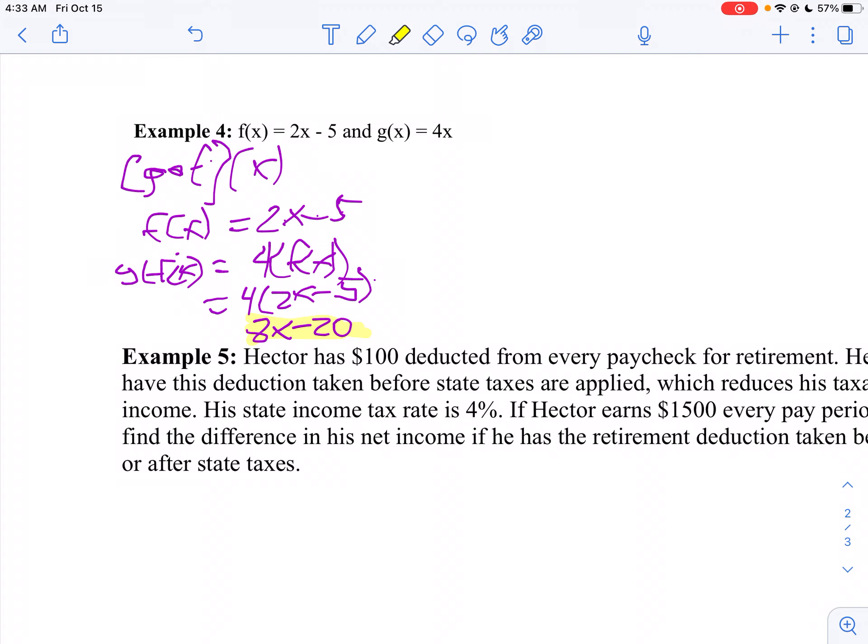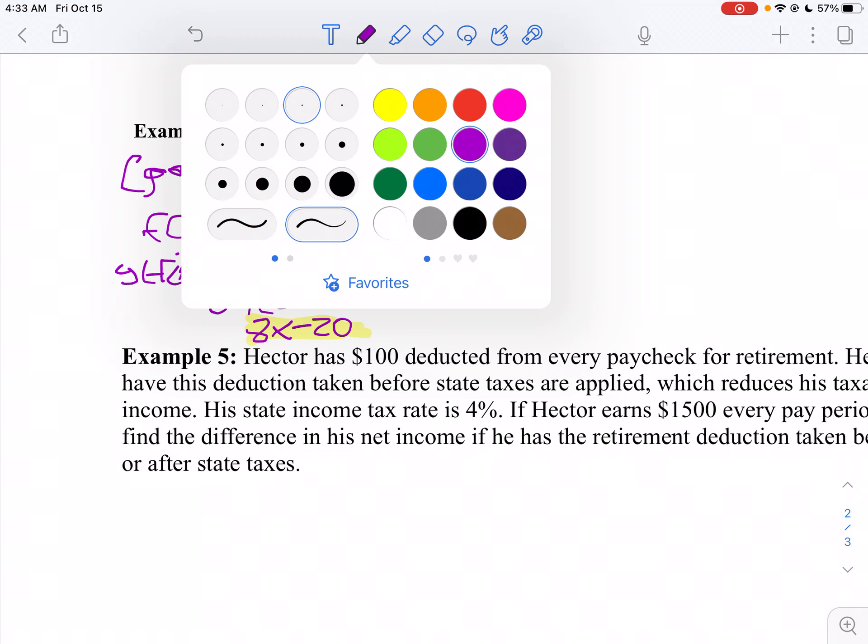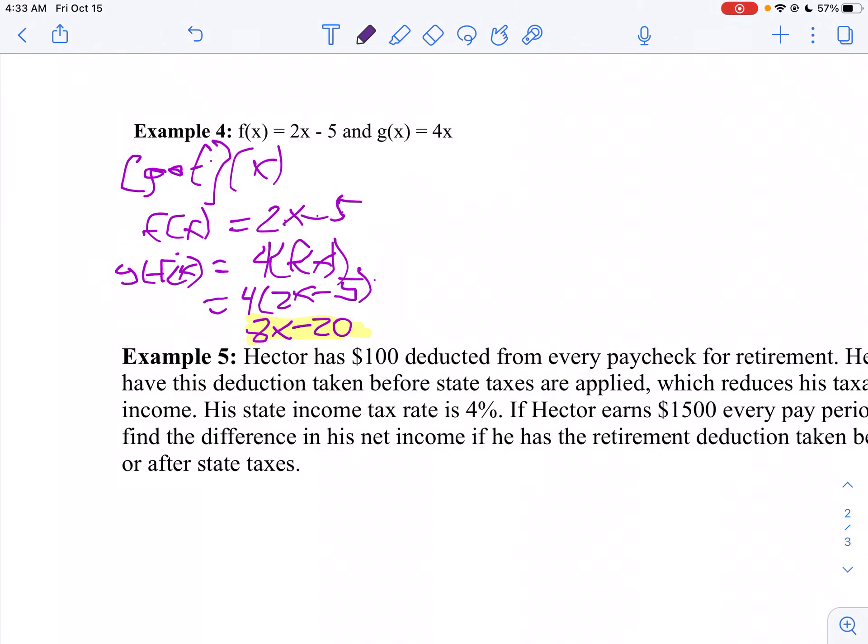Now let's do f of g of x. So if I do f of g of x, well, I start here. g of x I know is 4x. So I'm going to find f of g of x. So I'm going to take my function f. Instead of writing x, I'm going to write g of x.